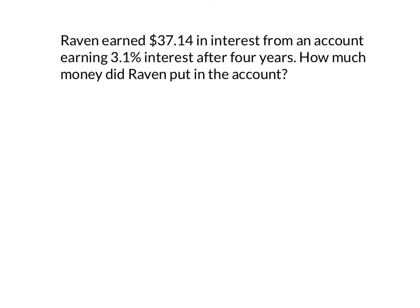Raven earned $37.14 in interest from an account earning 3.1% interest after four years. How much money did Raven put in the account? So this time we are looking for — and sometimes it's a good idea to write down what you're looking for — we're looking for the principal. I still start by writing out the formula: I equals PRT.